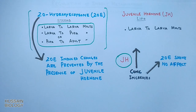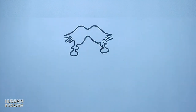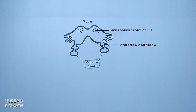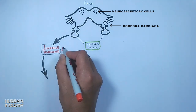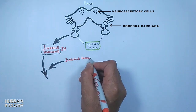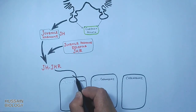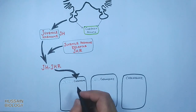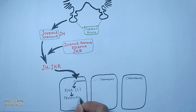Now let's see in detail the hormonal control of insect metamorphosis. In this diagram we can see the brain of the insect, which has neurosecretory cells, the corpora cardiaca, and corpora allata. The corpora allata secretes juvenile hormone, which combines with the juvenile hormone receptor. Once juvenile hormone combines with the receptor, it enters the nucleus where it drives the expression of larval genes by producing larval RNA, leading to the formation of larval structures.